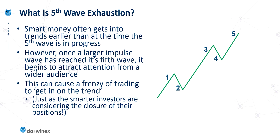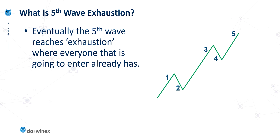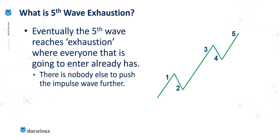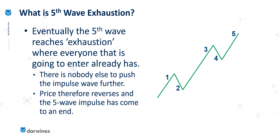It's that combination of the smarter investors closing their positions and the new entrants to the market effectively running out that means this fifth wave gets exhausted. Everyone who is going to enter the trend already has — there's no one left. And so at this point there's nobody else to push the impulse wave any further. Because of that, the price therefore reverses and the five-wave impulse has come to an end, meaning we see the typical ABC pattern or a pullback to that original impulse.